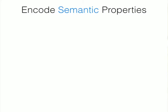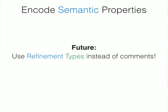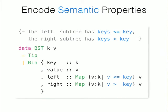In the future, we will use refinement types to encode all these kinds of semantic properties instead of comments. Here is again my binary search tree example, and inside the types I have packed all the comments. In my definition, the left subtree is a tree whose keys are less than the current key — this comment became a refinement of my Haskell data definition.